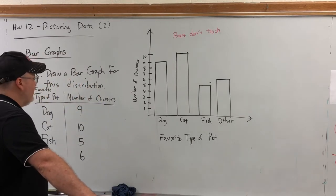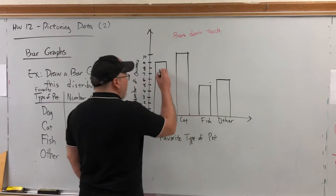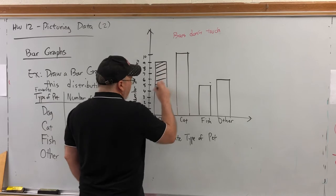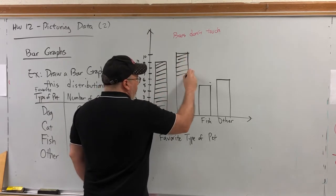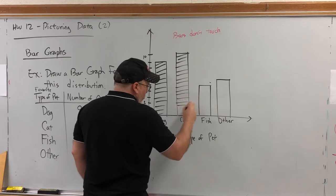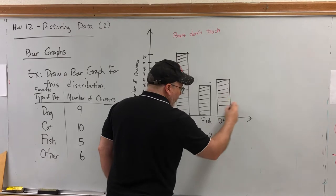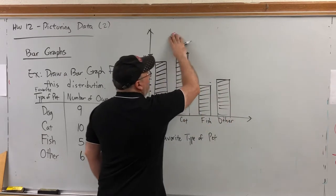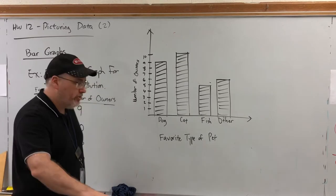So that's all a bar graph is. I don't know what else to say. You can make it pretty by shading them in. You can use different colors, etc. But the trick to a good bar graph and a good picture describing data in general is to make sure that nothing is left to interpretation. Nothing can be misunderstood.